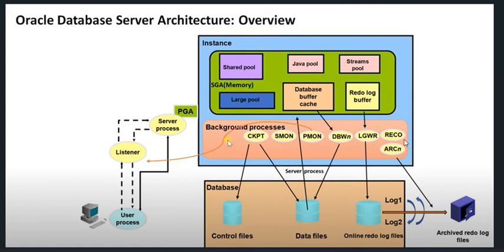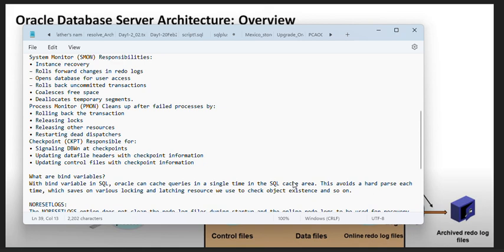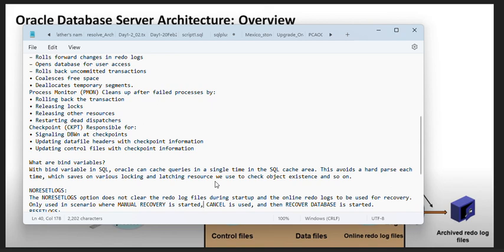There is also a very important question: what is a bind variable and why is it important? When we use a bind variable, we don't need to go for hard parsing every time. Bind variables reduce the locks and latches that occur while fetching data. With a bind variable, Oracle can cache a query in a single SQL cache area. This avoids hard parsing each time, which saves on various latch and locking resources used to check object existence and so on.